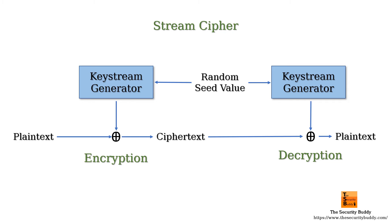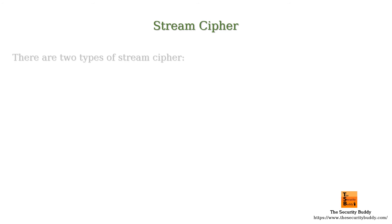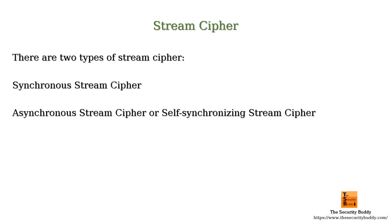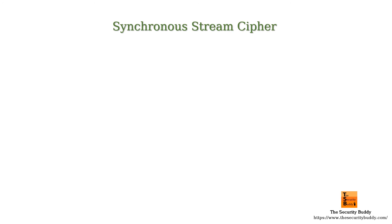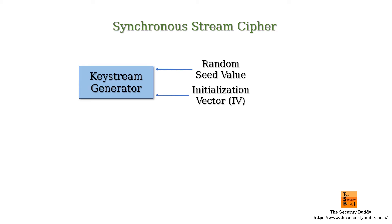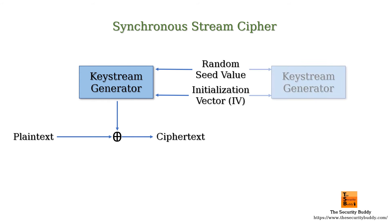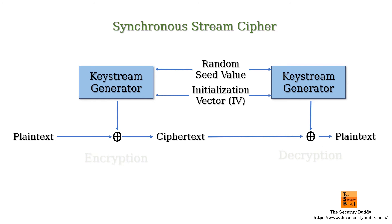There are two types of stream cipher: synchronous stream cipher and asynchronous stream cipher, or self-synchronous stream cipher. In a synchronous stream cipher, the key stream is generated independently of the plain text or the cipher text. A pseudo-random number generator is seeded with the cipher key and produces a key stream that is independent of the plain text or the cipher text.